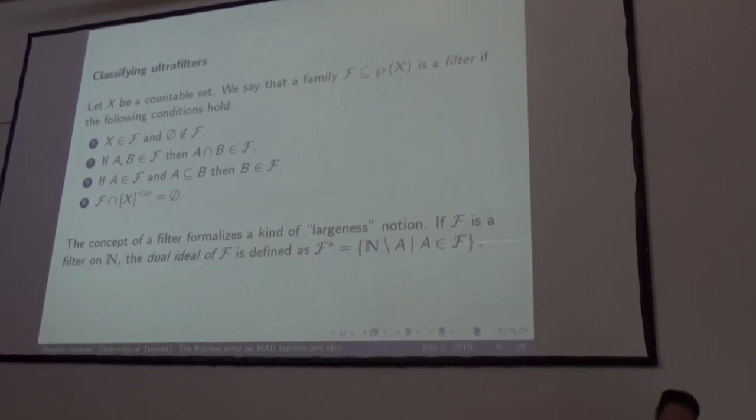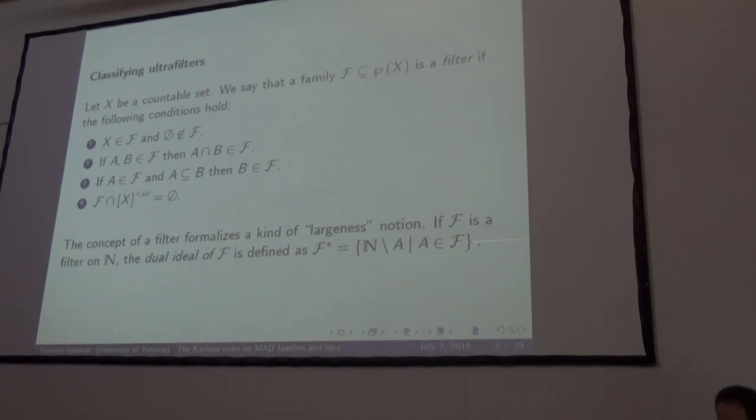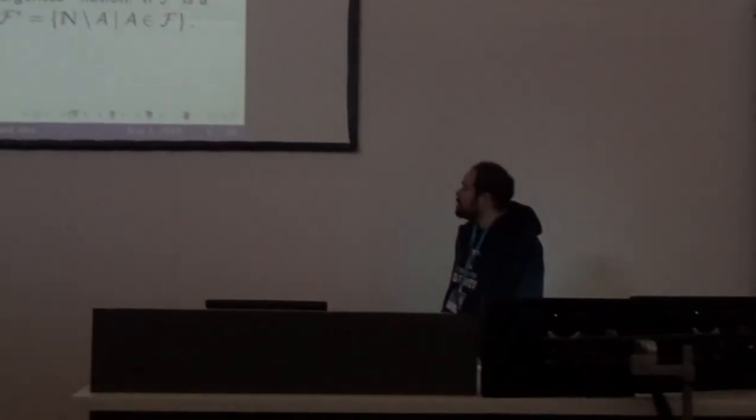Ideals formalize the idea of being small; a filter is like a notion of largeness, and these notions are dual. If we have a filter F on the natural numbers, the dual ideal F* is defined by taking complements. If F is a filter, then F* will be an ideal.